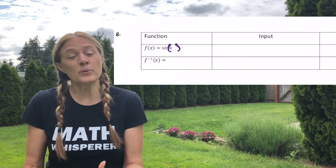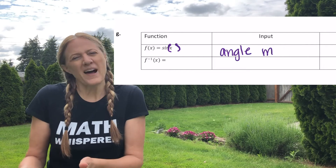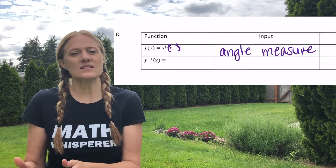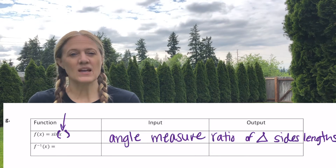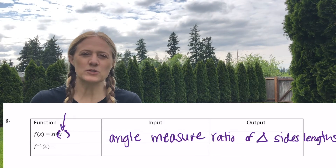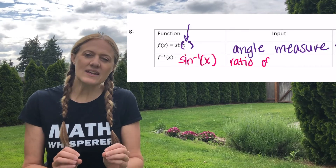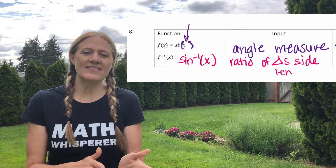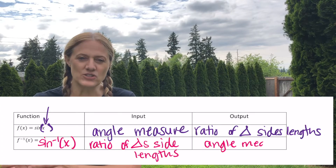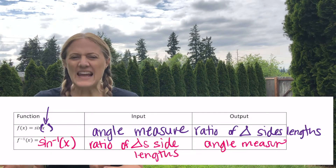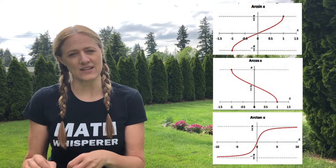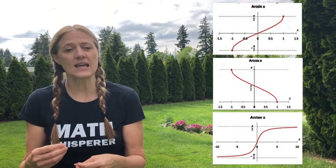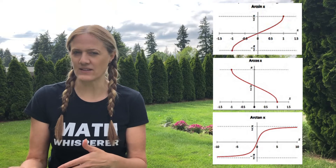When we have sine of x, the input is an angle measure — so sine of pi over 4 or sine of 30 degrees. The output is the ratio of the side lengths of that right triangle, as we developed during our unit circle lesson. So now when we think about inverse sine, we have to adjust our thinking. The input for inverse sine is the ratio of the side lengths of the triangle, and the output is going to be the angle measure itself. The answer to an inverse trig problem is an angle measure, whether in radians or in degrees.